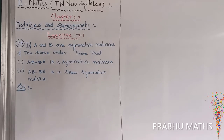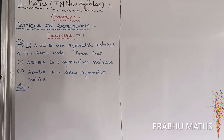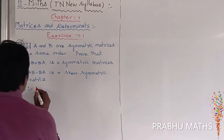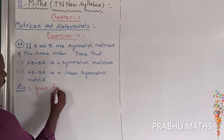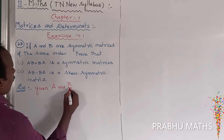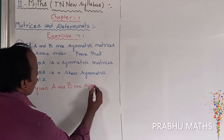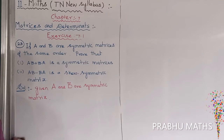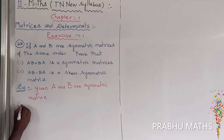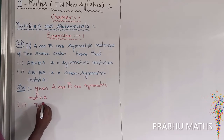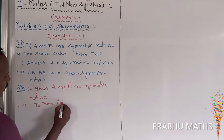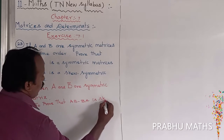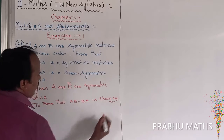Second subdivision: AB minus BA is a skew-symmetric matrix. Skew-symmetric means A transpose equals minus A. The given information is that A and B are symmetric matrices. To prove that AB minus BA is a skew-symmetric matrix.